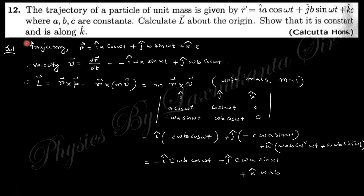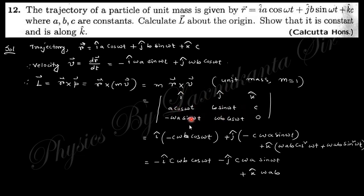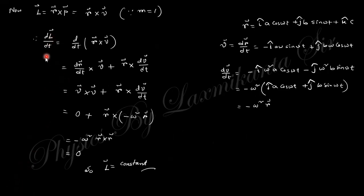Next question: the trajectory of a particle of unit mass is given by a certain expression where a, b, c, r are constants. Calculate the angular momentum L about the origin. From the position trajectory, the velocity is dr/dt. Angular momentum is r × p = r × mv, and since unit mass m = 1, it becomes r × v. Computing this cross product gives the value of L.